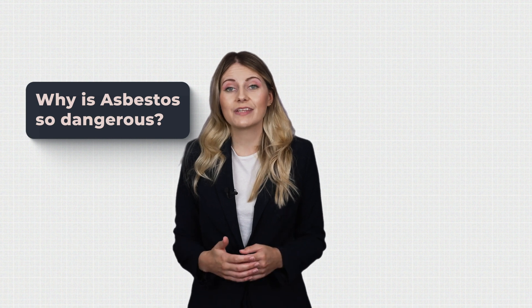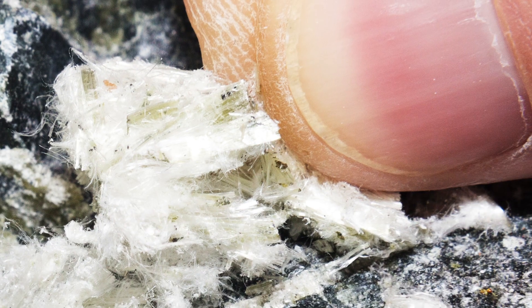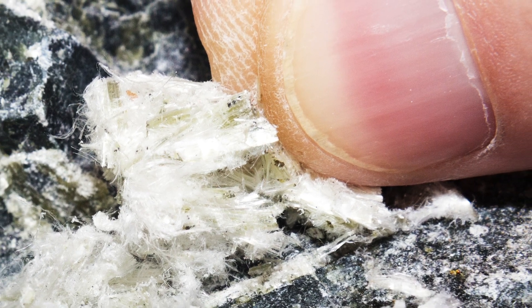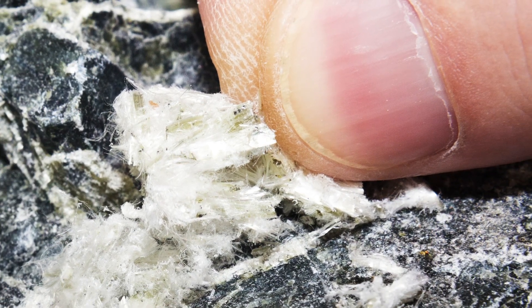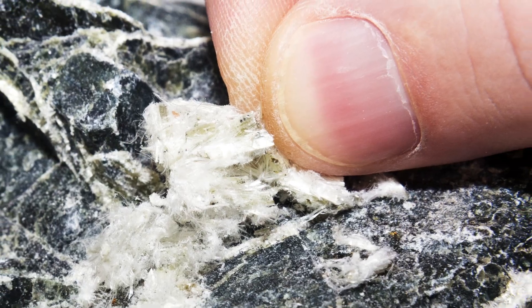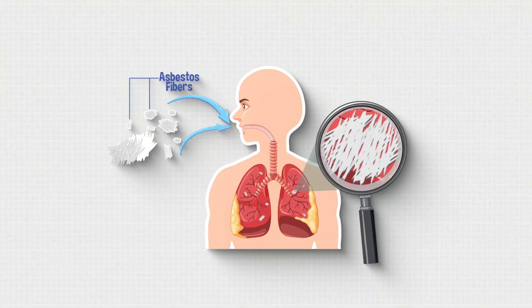So why is asbestos so dangerous? Let's look at it from a scientific point of view. Asbestos is hazardous to us mainly because it is carcinogenic — that is, it has the potential to cause cancer. It can also have potentially fatal effects on the respiratory system. The majority of fatalities come from lung cancer, but seeing as the symptoms are almost indistinguishable from conditions caused by long-term smoking, the true impact is difficult to measure.